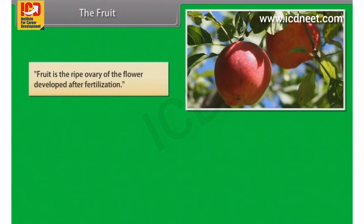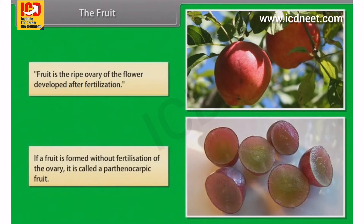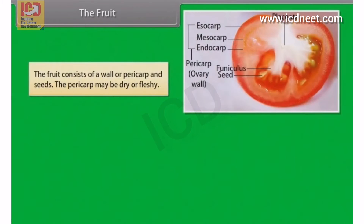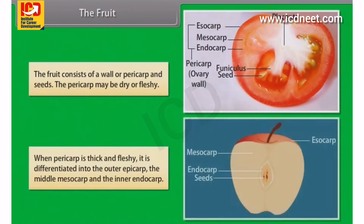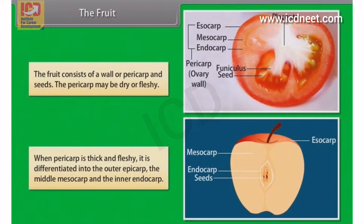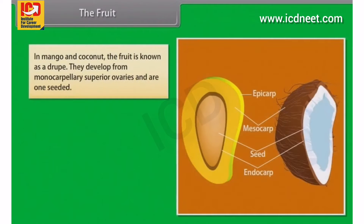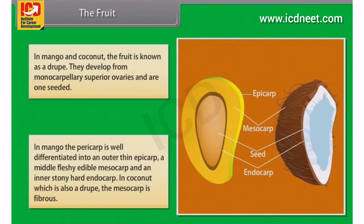Fruit is the ripe ovary of the flower developed after fertilization. If a fruit is formed without fertilization of the ovary, it is called a parthenocarpic fruit. The fruit consists of a wall, a pericarp and seeds. The pericarp may be dry or fleshy. When pericarp is thick and fleshy, it is differentiated into the outer epicarp, the middle mesocarp and the inner endocarp. In mango and coconut, the fruit is known as a drupe. They develop from monocarpellary superior ovaries and are one seeded. In mango, the pericarp is well differentiated into an outer thin epicarp, a middle fleshy edible mesocarp and an inner stony hard endocarp. In coconut, which is also a drupe, the mesocarp is fibrous.